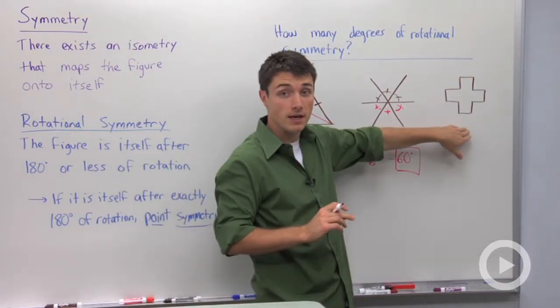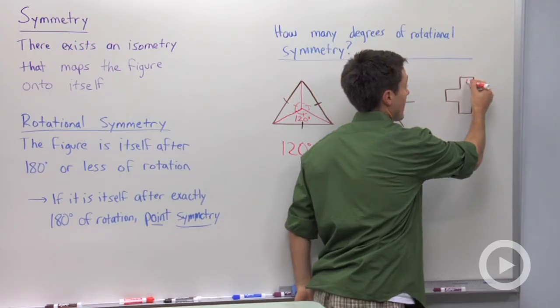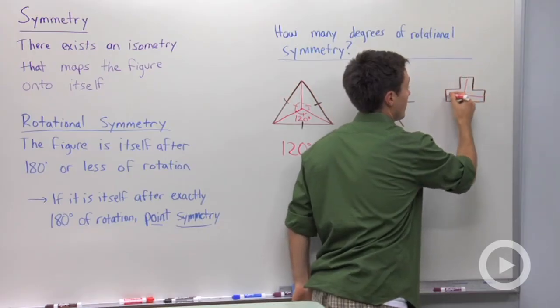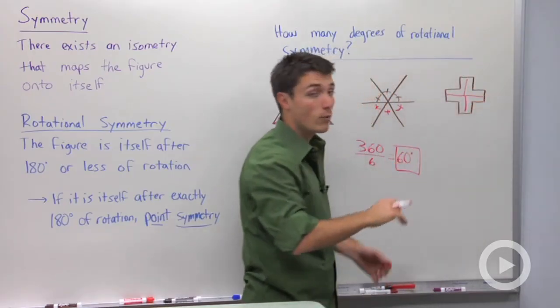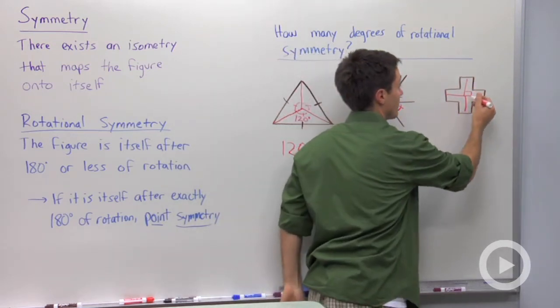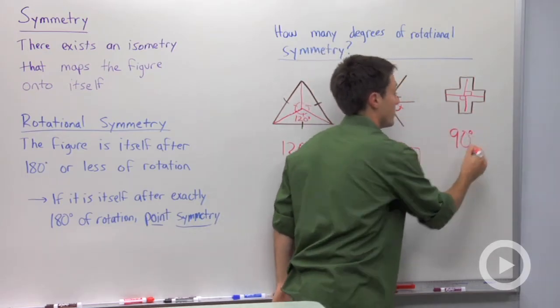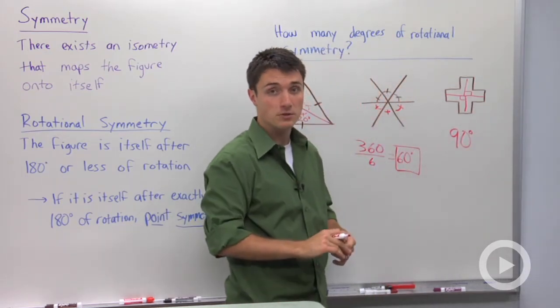Last, if we look at this plus sign. If I had drawn this perfectly, it's pretty clear that there are four ways that we can rotate this. So if we take 360 degrees and we rotate it four different ways, it's pretty clear that this will have 90 degrees of rotational symmetry.